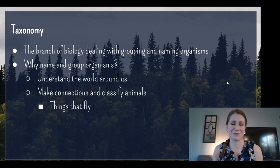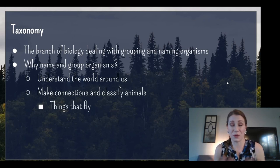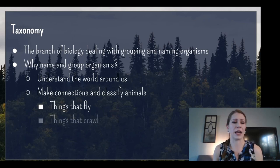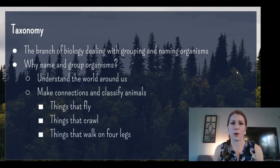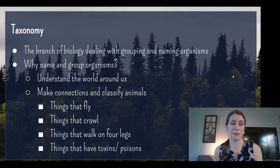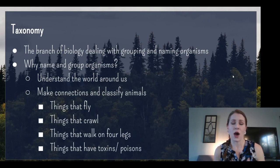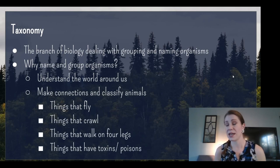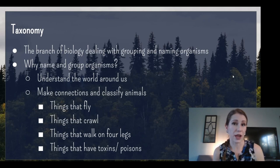Back in the day, we used to classify them based on somewhat arbitrary things — based on what we could see. So we might group them into categories like things that fly, things that crawl, things that walk on four legs, or things that may have toxins or poisons. These were things people could either see or observe very easily. Nowadays, we classify them more based on their genetics and shared characteristics to make it a little bit more specific.